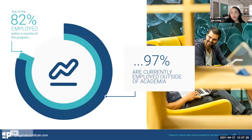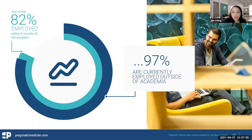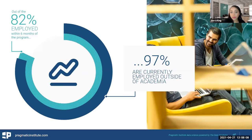A big component of our program that we really pride ourselves in is helping students not only grasp data science concepts, but also getting placed in that field. For our data science fellowship program, 97% of students that go through our program are currently employed outside of academia, and 82% are employed within six months of completing the program. Those are really great numbers. Not only learning content, but being able to transition into a data science or data analyst role — that's where our program stands out, because we help you to do both.